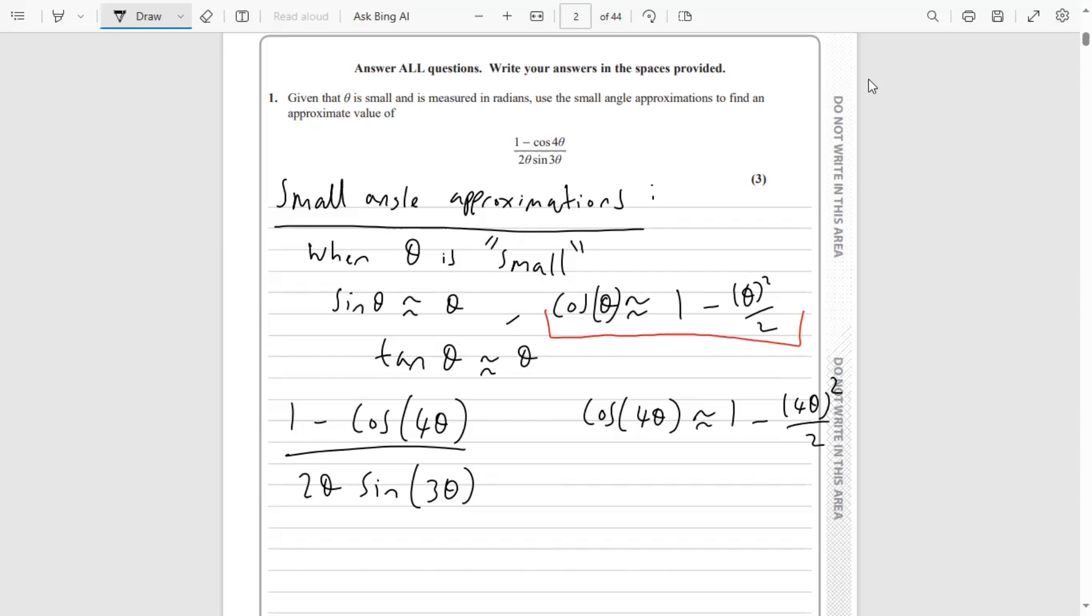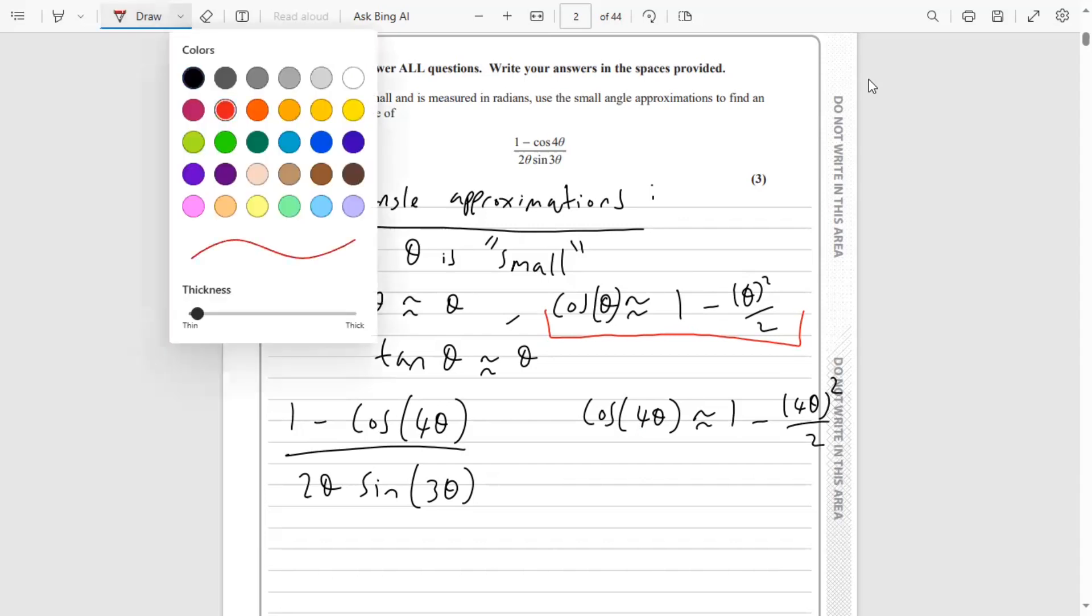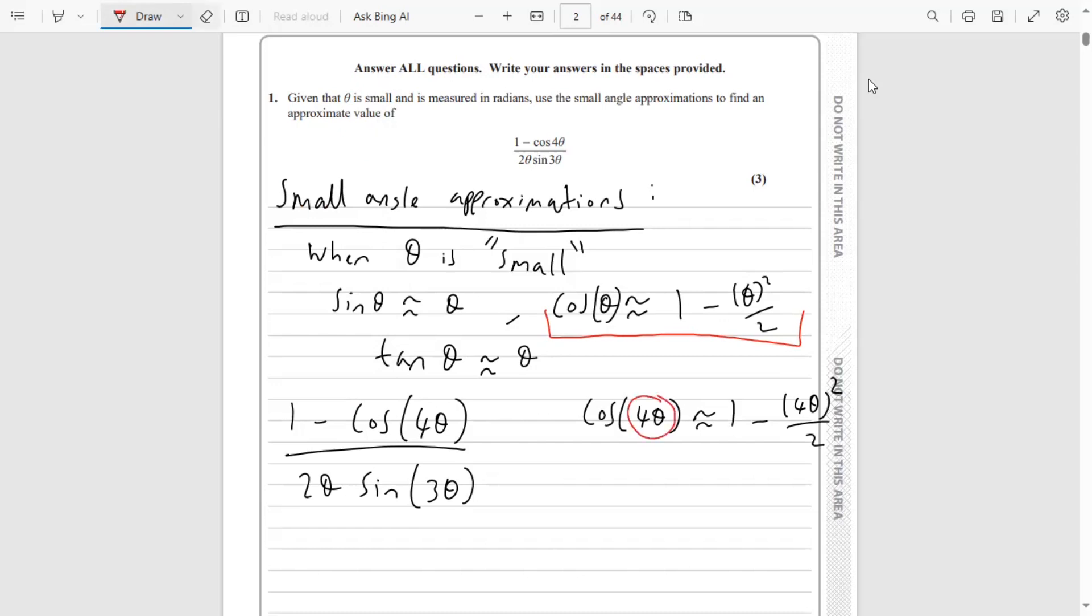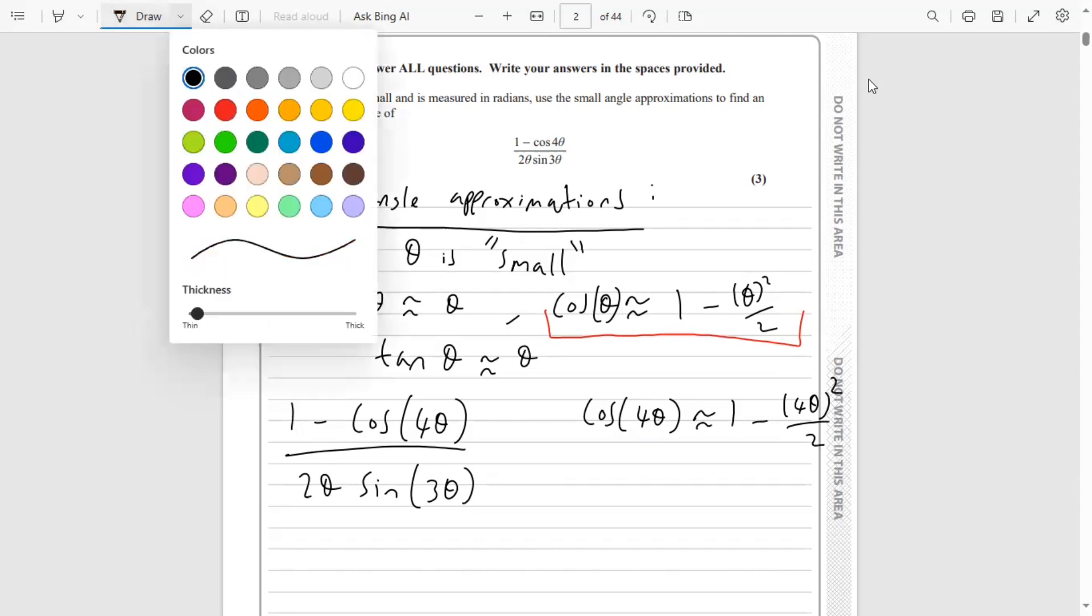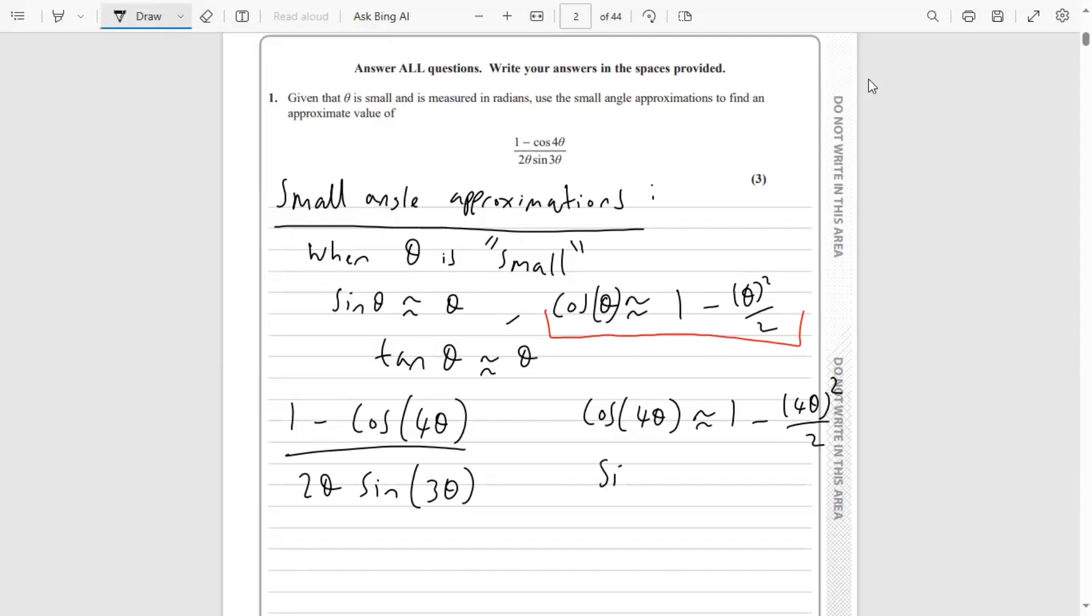It's just using normal function rules. When you plug in a new argument into a function, in this case 4θ instead of θ, you plug in 4θ and square the entire 4θ.